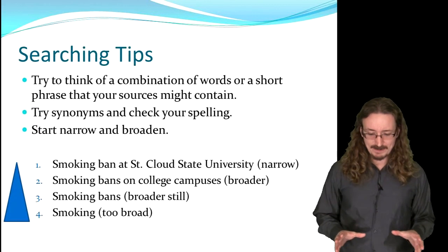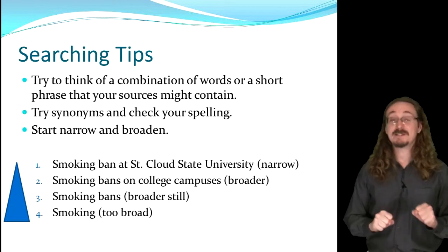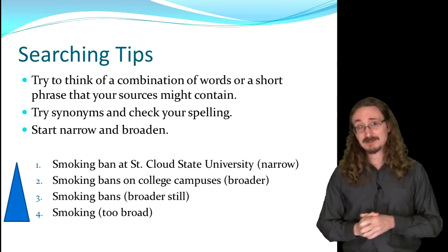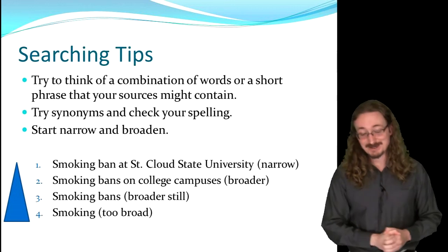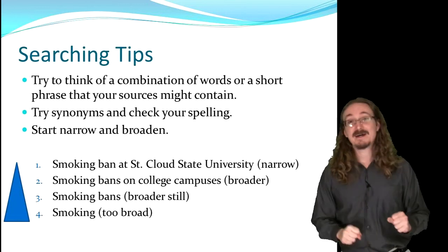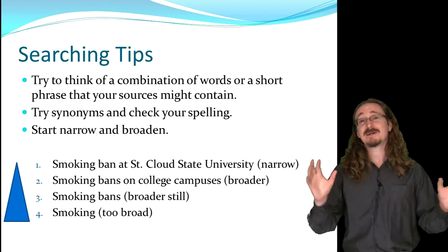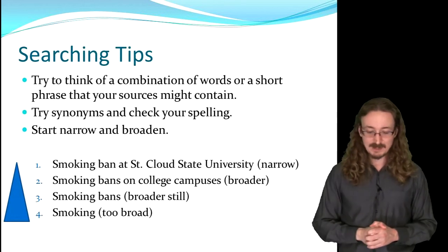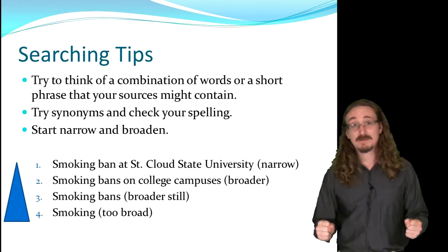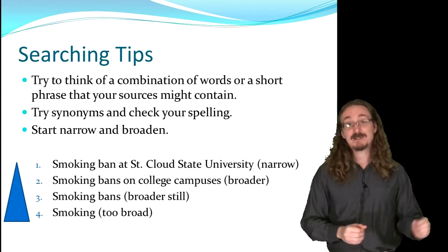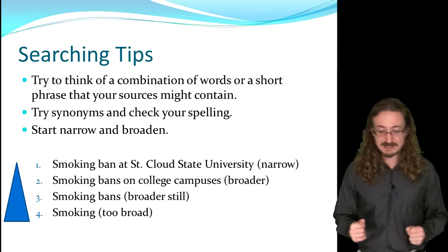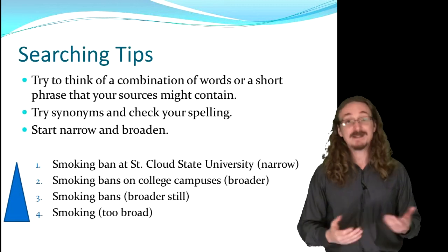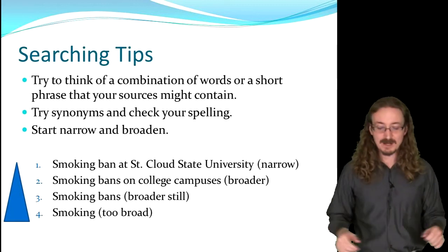When doing searches, I like to start narrow. Think about exactly what your topic is and use lots of specific keywords and phrases. You'll probably get a short list at first, but that's okay — you'll find the most relevant stuff. If you don't find anything, eliminate some keywords or try synonyms. For example, 'smoking ban at St. Cloud State University' gives almost nothing; 'smoking bans on college campuses' gives a bit more; 'smoking bans' is bigger; just 'smoking' returns tens of thousands of results and isn't very useful. Start narrow, then work broader.